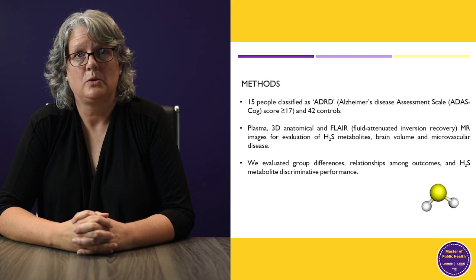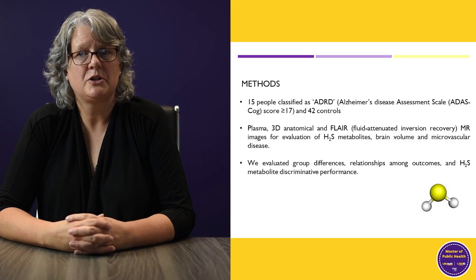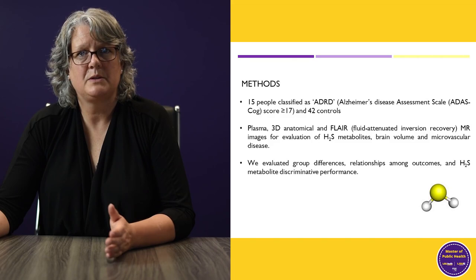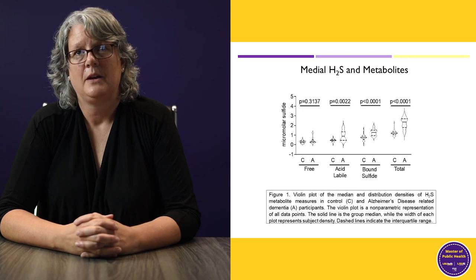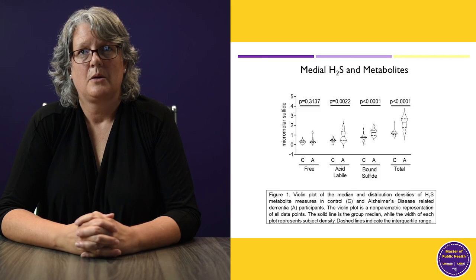We enrolled a lot of people, screened them with a cognitive test called the Alzheimer's disease assessment scale, took MRI images including the FLAIR — fluid attenuated inversion recovery — which gives us a measure of microvascular disease in the brain, and then looked at differences among people with dementia and people without. This violin plot shows that total hydrogen sulfide was significantly different between controls and Alzheimer's disease participants — levels were significantly increased in Alzheimer's disease.